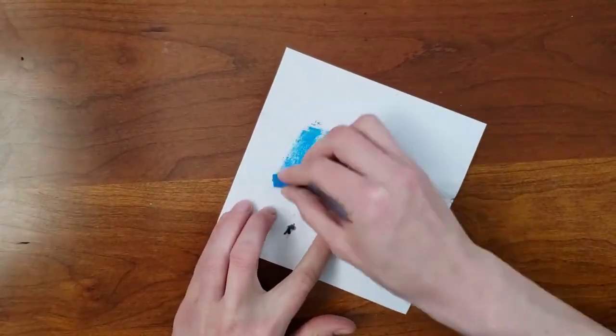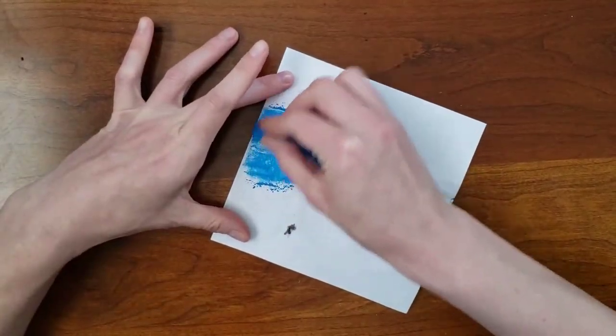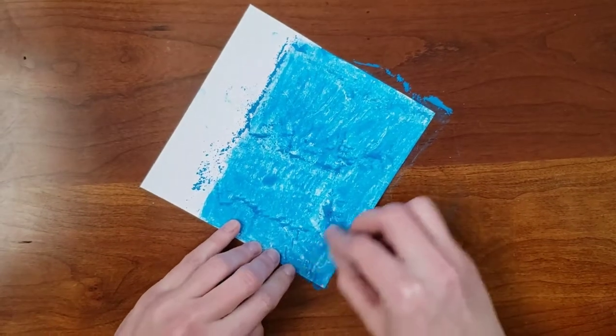I begin by filling in the back of the drawing with pastel, being sure to cover it completely so there aren't any white gaps.